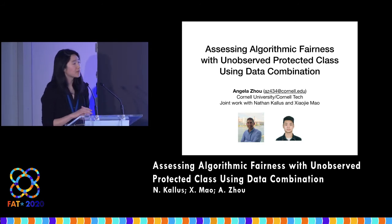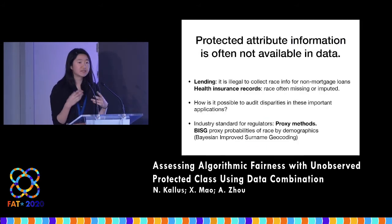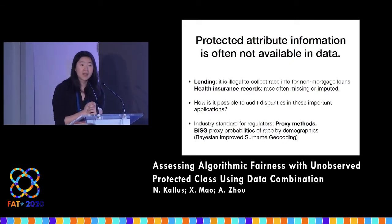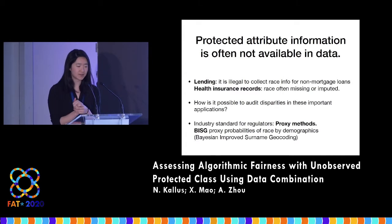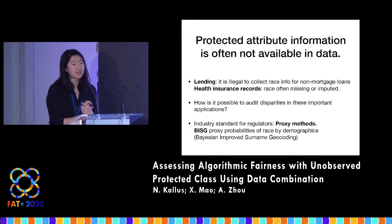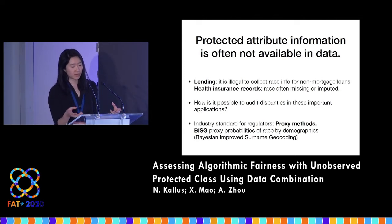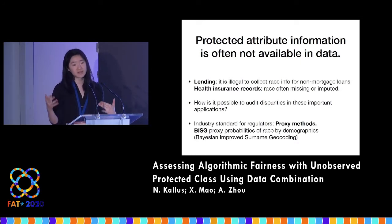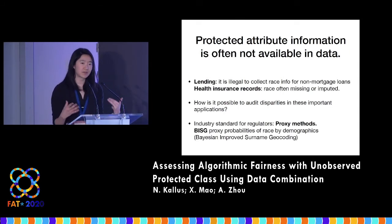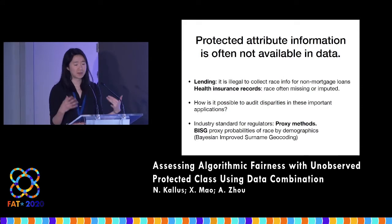So when does this occur? A high-profile example is in the financial industry, where in lending it's actually illegal to collect race information for non-mortgage loans. There are also many other situations, such as health insurance records, where race is often missing or imputed. In these important application areas, it's a very important project to be able to audit simple disparities in the first place. Even before we can start discussing questions of adjustment or alternative interventions, we have to be able to measure disparities in order to contest them.